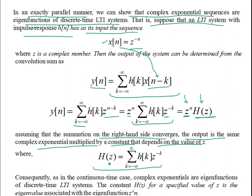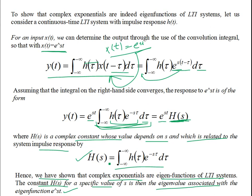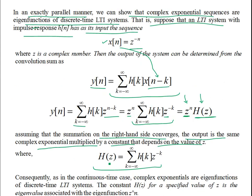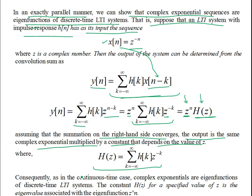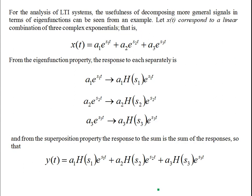Both s and z are complex variables that are two-dimensional and can be represented on an Argand diagram. H(z) is the definition of the Z-transform; H(s) corresponds to the Laplace transform. The Laplace transform applies to continuous time and the Z-transform applies to discrete time. We'll come to Z-transforms later, but the key idea is that applying an exponential signal to an LTI system produces an output of the same form, multiplied by H(s) or H(z) depending on the domain.